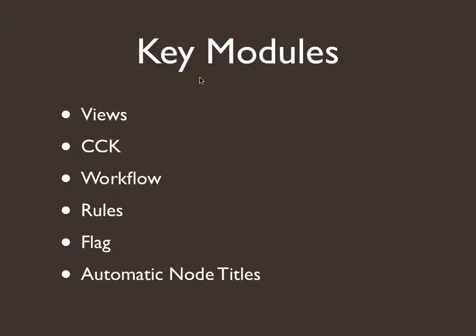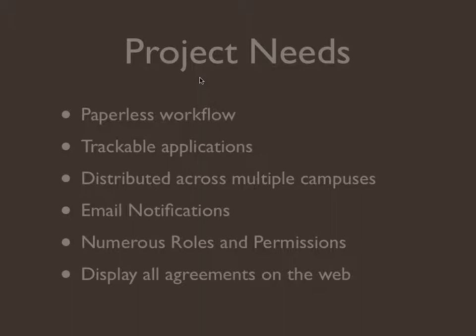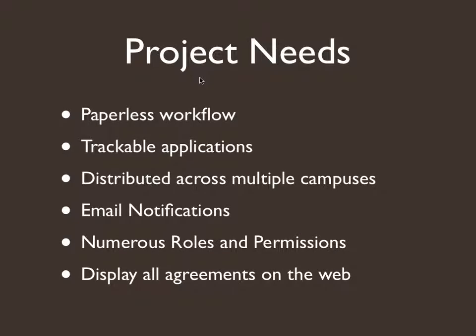This year we decided to get this system working better. I'm going to show you a few modules we used: mainly Views, CCK, the Workflow module, Rules, the Flag module, and Automatic Node Titles. There was a lot of planning that went into this because the system is a bit complicated due to the approval process. We needed a paperless workflow so that our office, the consortium, could be an overseer — if an application got lost somewhere, we could see where it was, get on the phone, or send an email.